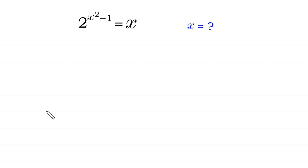Hello, welcome. We are going to solve this very nice exponential equation: 2 to the power x squared minus 1 is equal to x. We need to find all possible values of x.